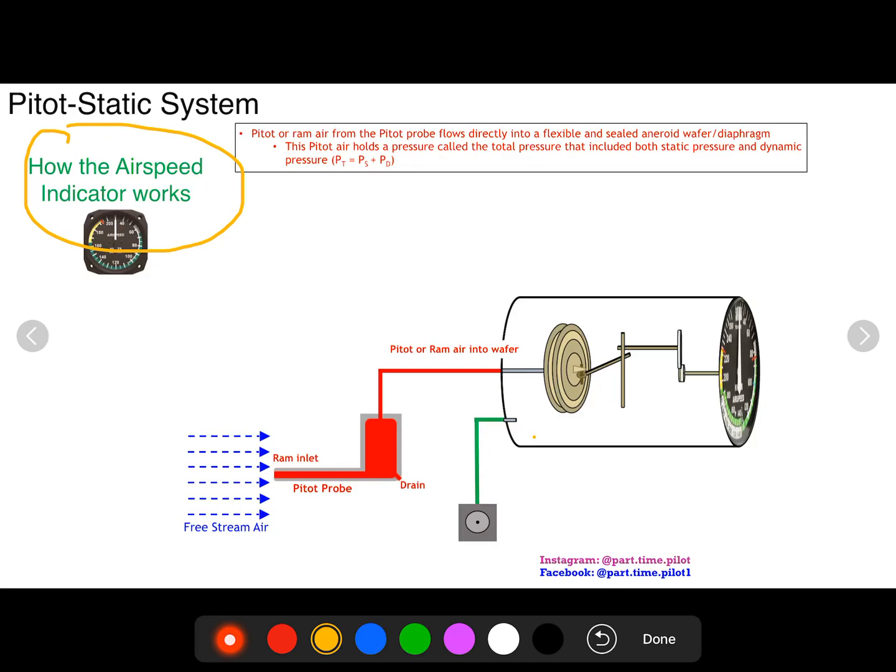If you watch my video on the pitot-static system, I talked about the difference between the pitot source and the static source. The pitot source is going to get us total pressure, the static source is going to get us static pressure. The difference is this pressure called P_D, which is dynamic pressure.